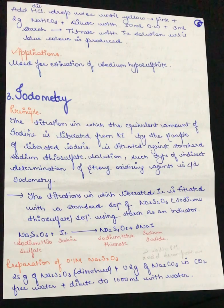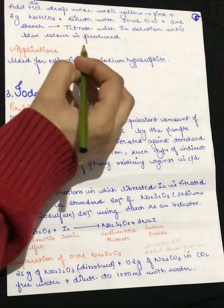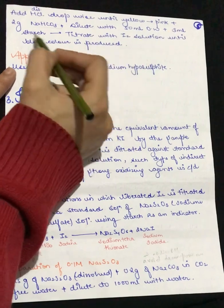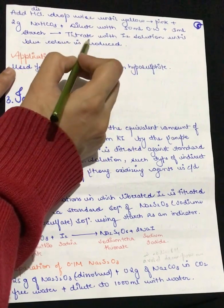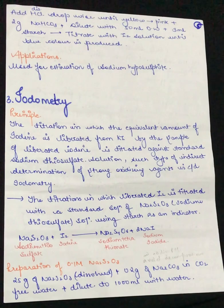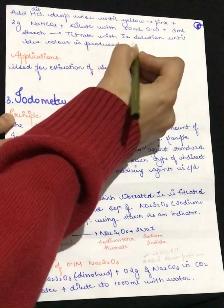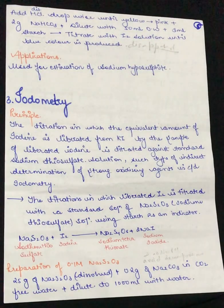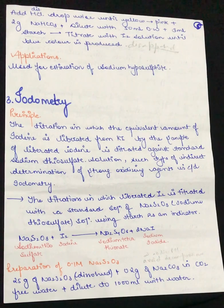This color change to pink is not the endpoint — this is just to confirm the reaction is complete. We will then add 2 grams of sodium bicarbonate and dilute with 50 ml distilled water again. Then we will add 3 ml starch solution and titrate with iodine solution. When we add starch, our solution turns blue, and at the titration endpoint, the blue color will disappear.